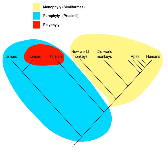On the other hand, polyphyletic groups can often be delimited in terms of clades — for example, the flying vertebrates consist of the bat, bird, and pterosaur clades. Because polyphyletic groups can frequently be defined as a sum of clades, they are usually considered less fundamental than monophyletic, single, whole clades.